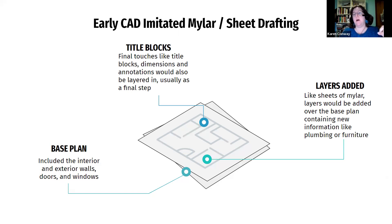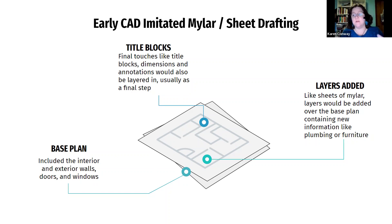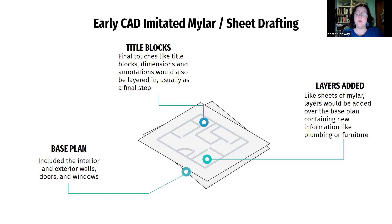Early CAD is based on the thought process of how people generated their drawings and how sets were managed in a large firm or office. You'd have a base plan that included all the interior and exterior walls, doors, windows — everything that, once you've confirmed your plan, isn't changing. Then you'd layer things on top of it, similar to mylar — things like plumbing, furniture, and lighting. This correlates directly into the layers in CAD, which also determined line weights and ink weights, as discussed in hand drafting class.